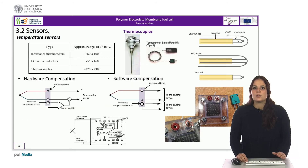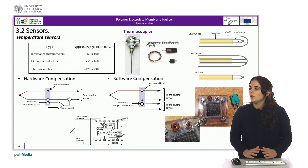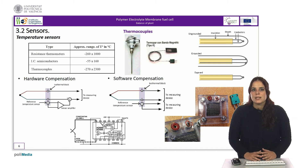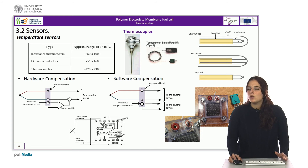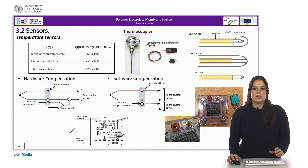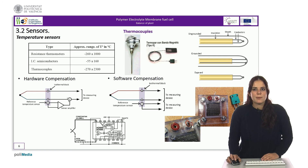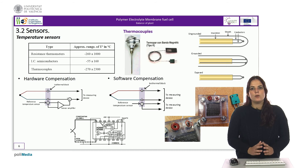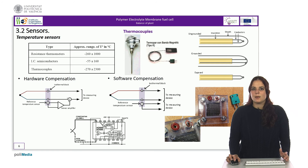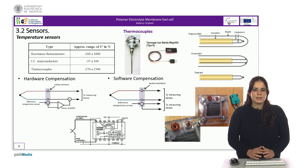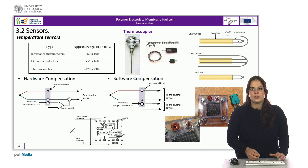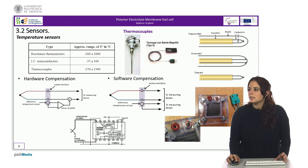Finally, thermocouples are two conductors of different metals joined at one end. The Seebeck effect describes a variation in voltage between the two conductors when the temperature of the joint varies with respect to the other end. The thermocouple may be encapsulated and attached to the metal capsule that encapsulates it, or it may be exposed. In this case, the size can be so small that it can be introduced into the stack itself to measure the internal temperature, as we can see in the pictures.